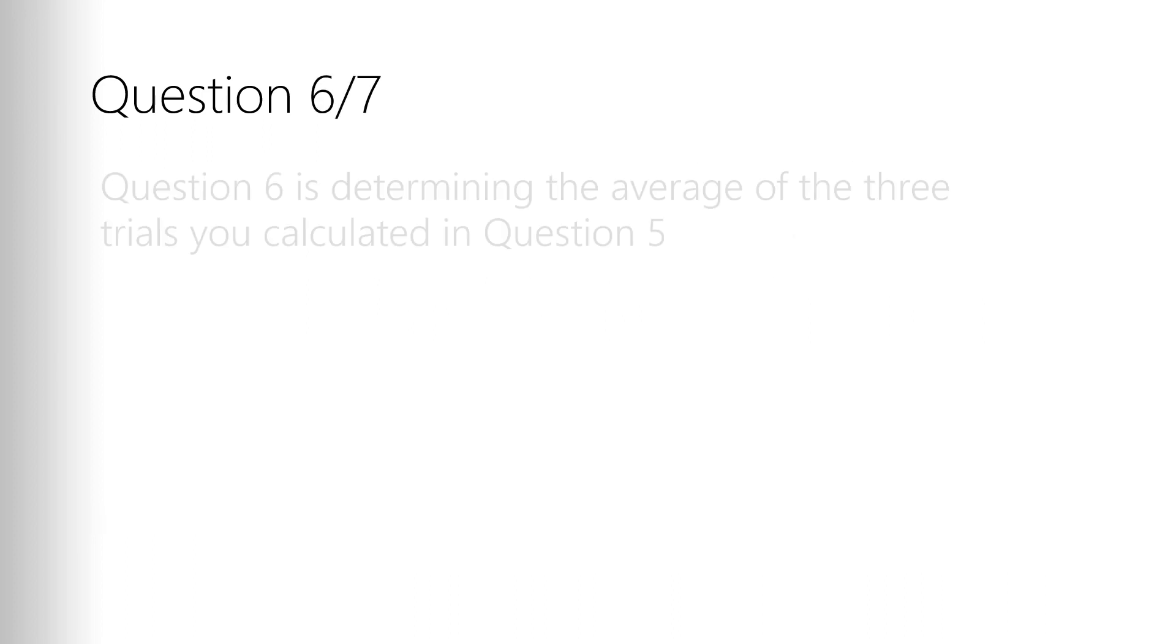Then question six is simply to get an average of those three values. So take the three values you calculated in question five, add them together, divide by three. That's it, straight average.